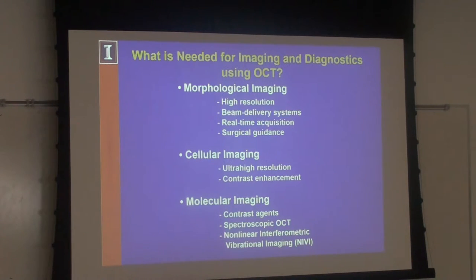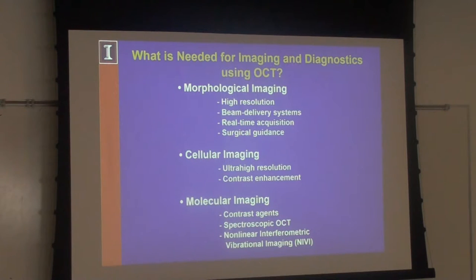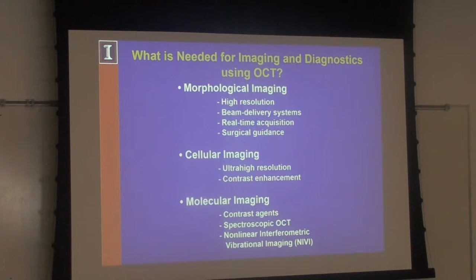For a retinal scan, you need mirrors to scan across the back — that's correct. People have also looked at line-field scanning: instead of scanning a point across, you create a line and scan that, using a 2D detector instead of a spectrometer. Some have done full-field OCT where you have a full field beam across the tissue and interfere it with full field in the reference arm, though there are disadvantages including crosstalk from multiple scattering.